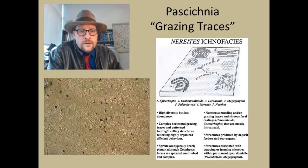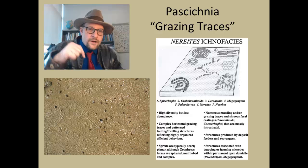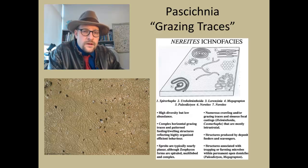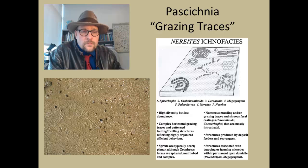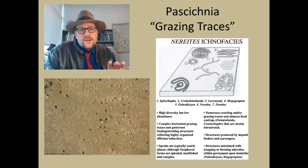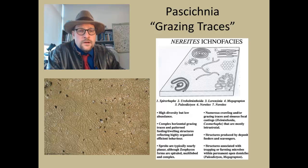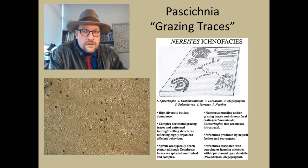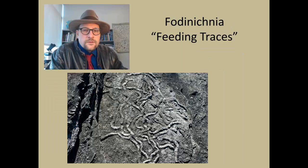Another very common type is grazing traces — pascichnia. This is very common with organisms that basically feed on the detritus on the substrate, for example gastropods. These are modern gastropods in a wetlands environment, basically coasting through the mud and grazing on whatever they can find. Another example of grazing traces are often found in deep marine systems — very low energy systems where organisms can graze on the ocean floor and make patterns that maximize the surface area they are feeding on.